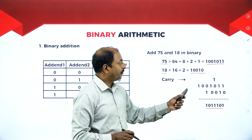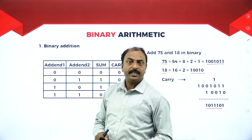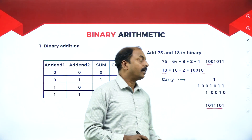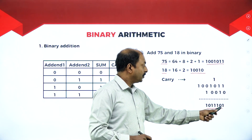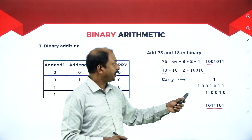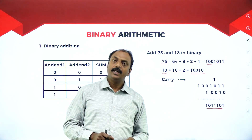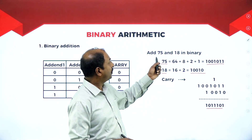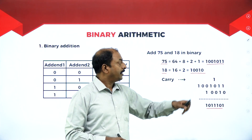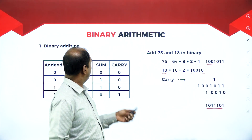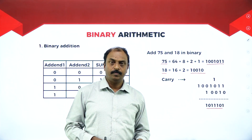The steps to be followed are: first, convert the given decimal numbers 75 and 18 into binary. Then, by following the rules of binary addition, add the two binary numbers. This result is the addition of 75 and 18 in binary — that is binary addition.